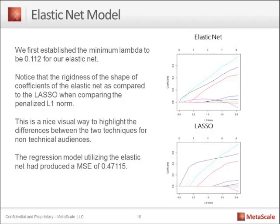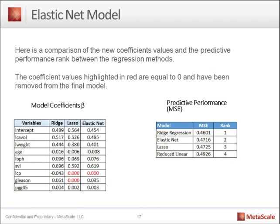We've created four different models from this prostate cancer dataset, and now we want to compare them to see which one performs better. We rank them based on the lowest mean squared error, and on the right-hand side we can see that all three advanced regression techniques are performing better than standard OLS regression. The trade-off is that they violate certain standard statistical assumptions, but if we're looking for predictive accuracy, it's very clear these three models outperform the conventional OLS approach.